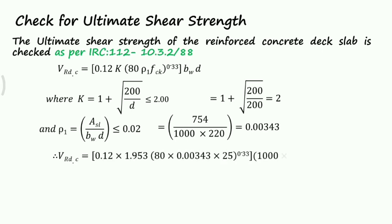VRDC equals 0.12 times 1.953 times 80 times rho 1 value 0.00343 times FCK 25 raised to 0.33 times 1000 times 220. We get 97.34 kN which is the resisting shear strength. The applied shear strength is 97.24 kN, hence the slab is safe in shear.